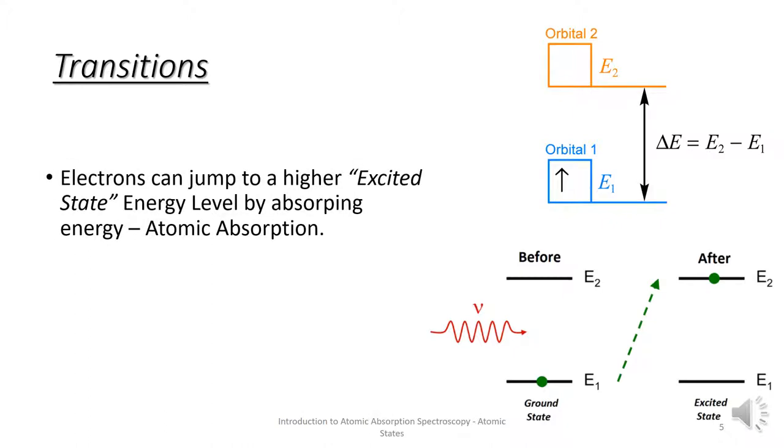When electrons transition to a higher excited state by absorbing energy, this is called atomic absorption.